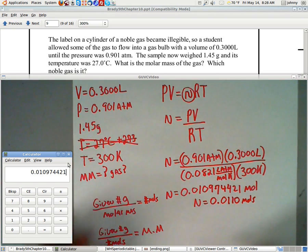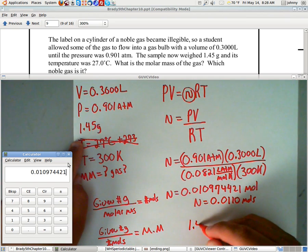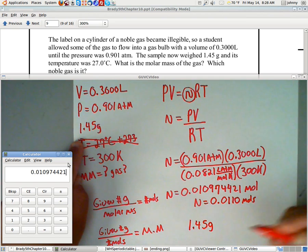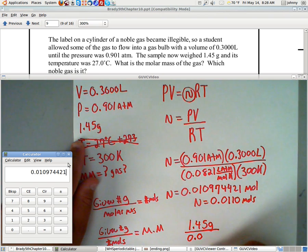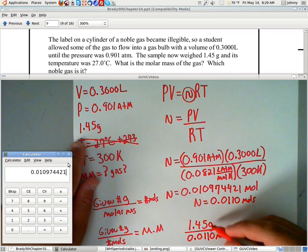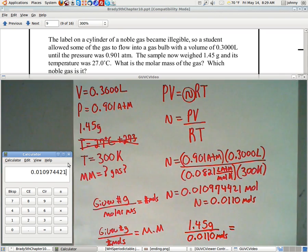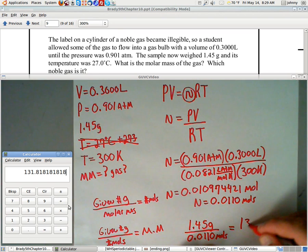So, now, all we have to do now is take this 1.45 grams, that was the given number of grams, divide it by the number of moles, which is 0.0110 moles. And see, there's the hint, grams per moles will give us our molar mass. It's going to be 1.45 divided by 0.0110. And we end up getting 131.82 grams per mole.